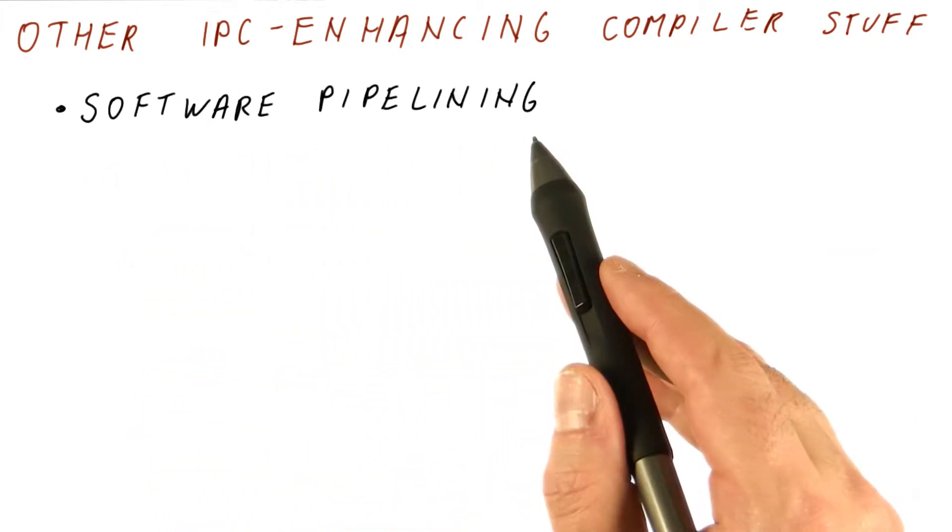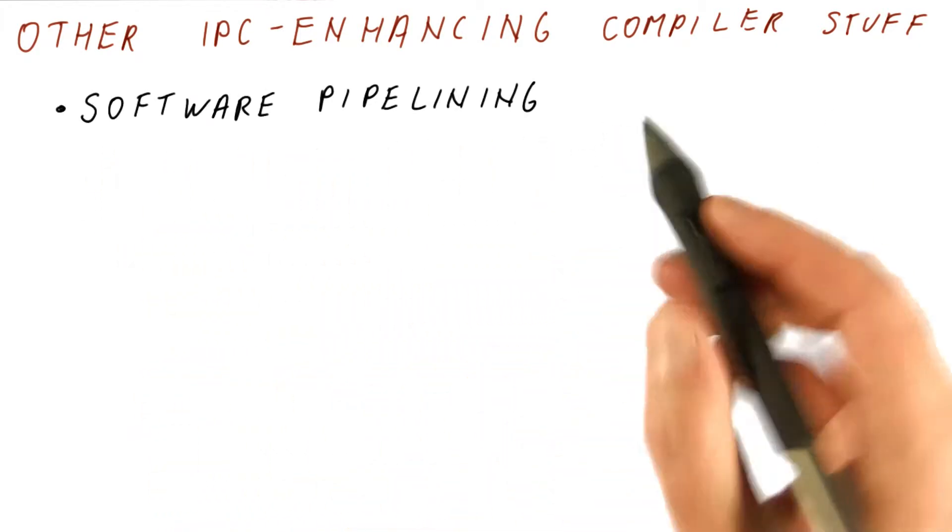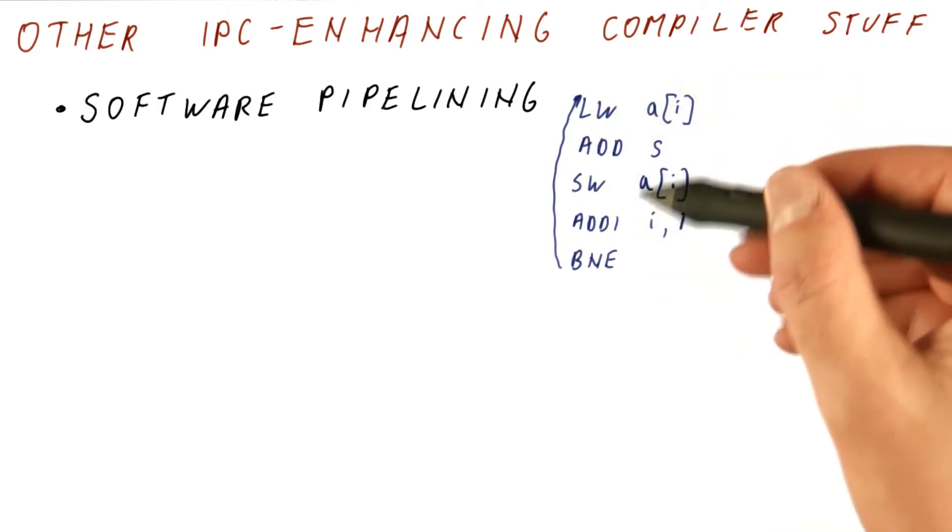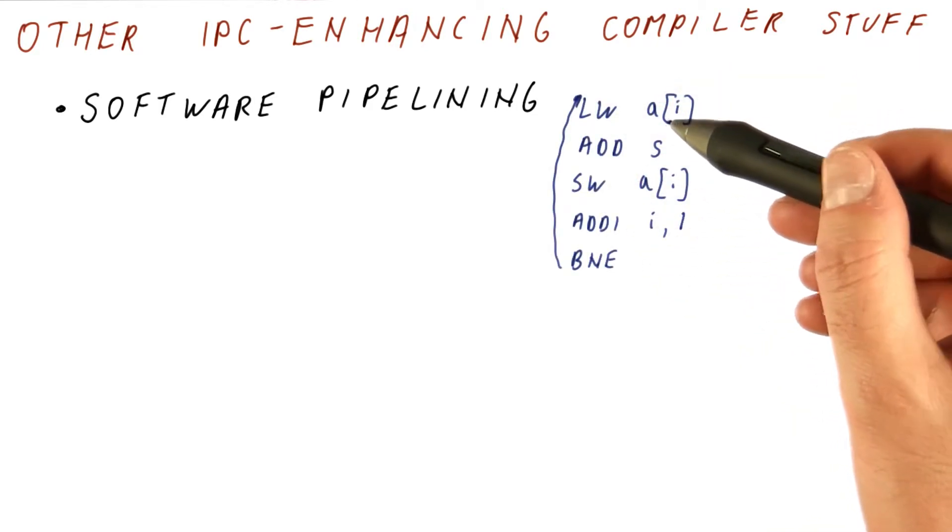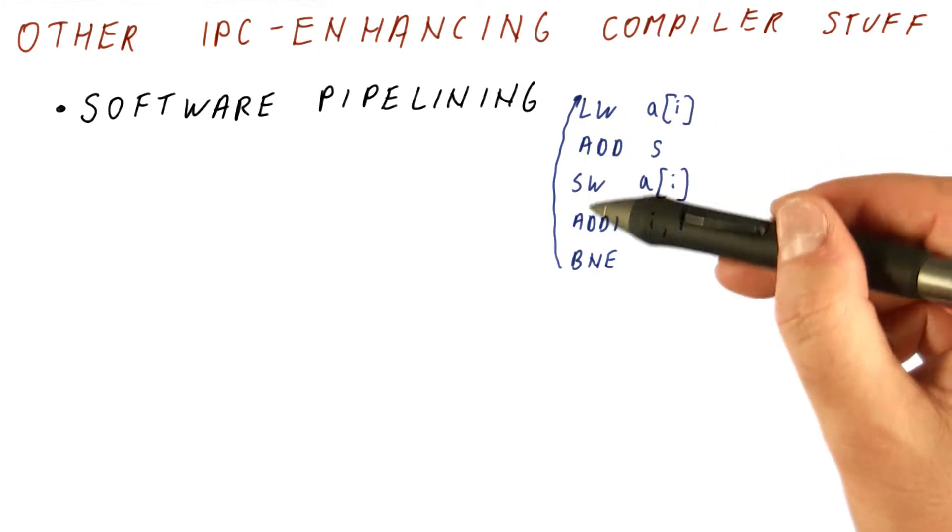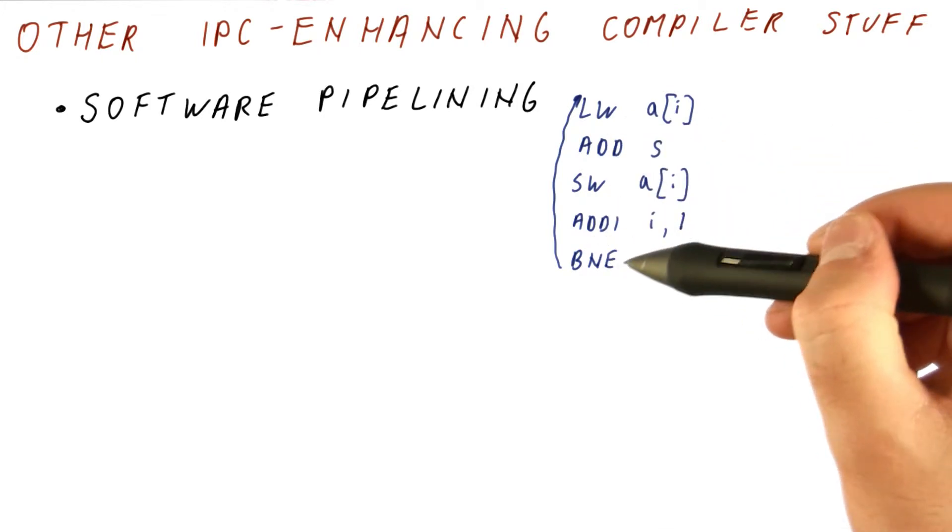The first technique is software pipelining. It's a technique that helps schedule loops like these in a way that doesn't greatly increase the code size, but it allows us to get the effect of unrolling many times.